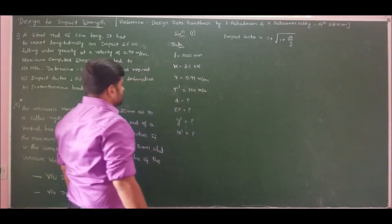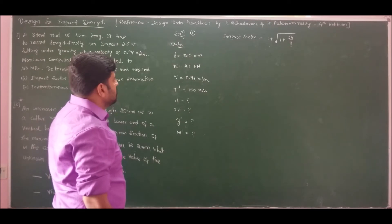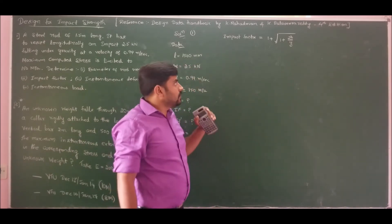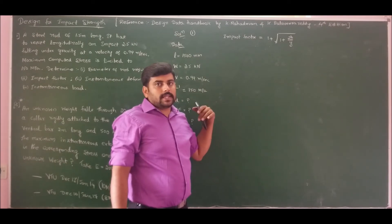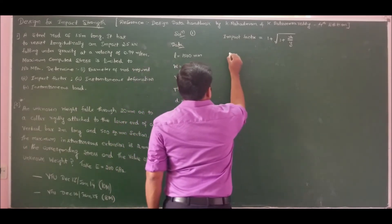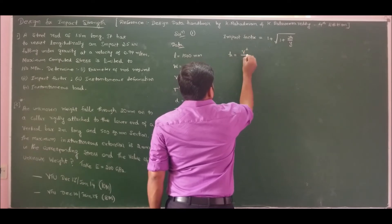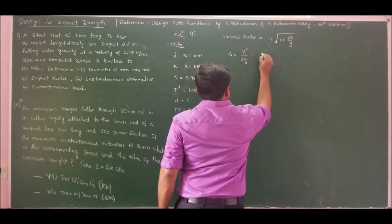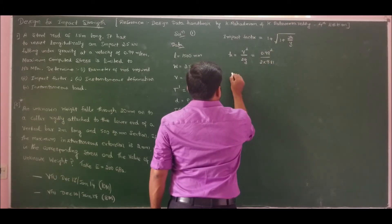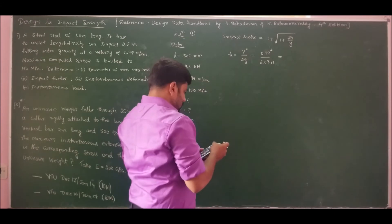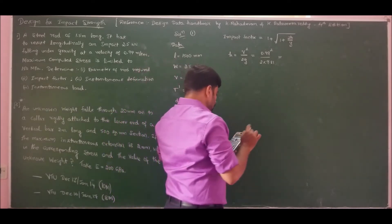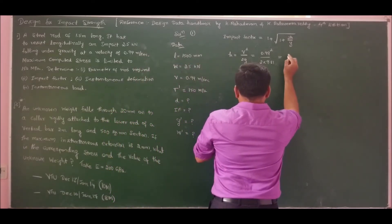H is the height of falling, and it is not directly given. But as discussed in the previous class, if we know the velocity we can find the height from which the load is falling using Newton's law of motion: H equals V squared divided by 2g. So H equals 0.99 squared divided by 2 into 9.81, which gives H as 49.95 millimeters.